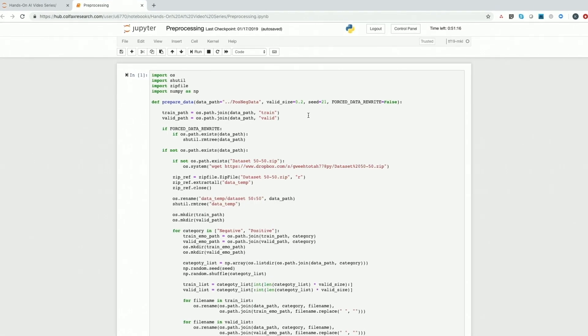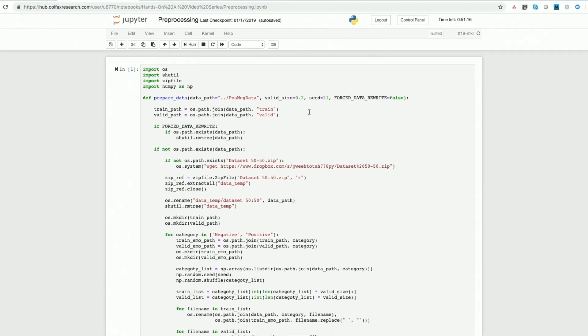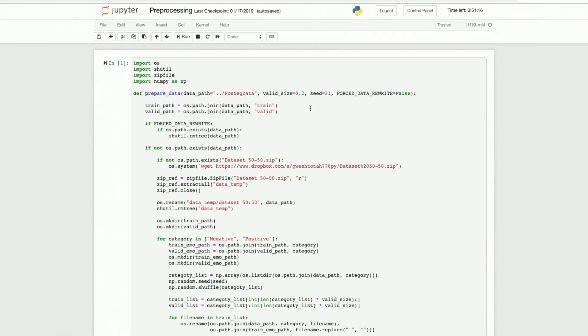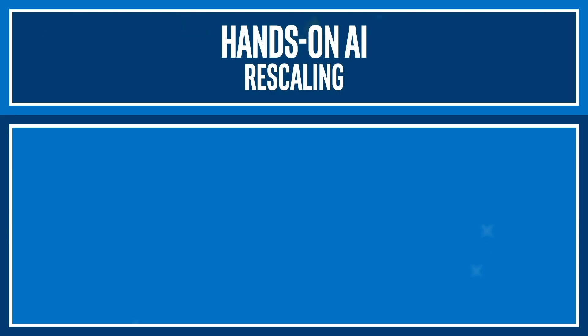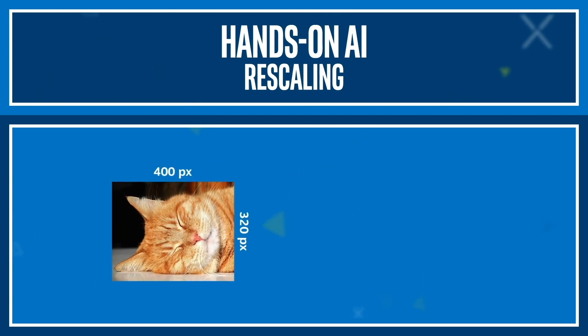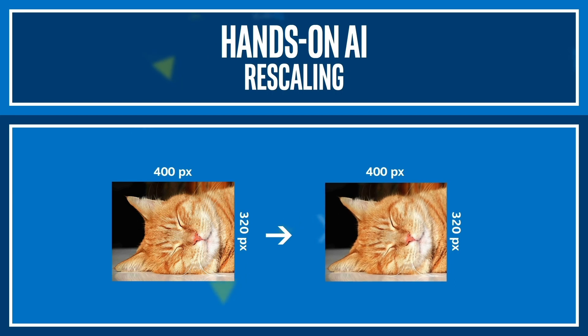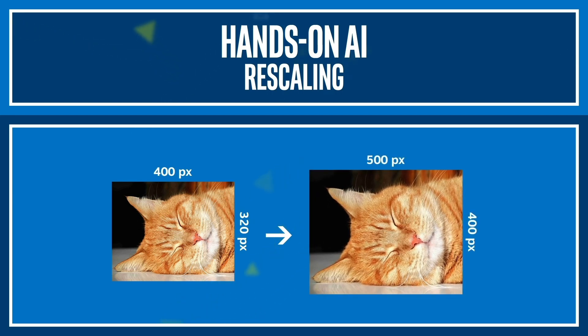Now let's take a look at a set of transformations that are commonly applied for cleaning up the data and their influence on images. All the code snippets can be found in the preprocessing Jupyter Notebook. We will also be working through these in a later episode. The first transformation is called rescaling. Rescaling is an operation that moves your data from one numerical range to another by division using predefined constants. In other words, we are transforming the images to the size we have predetermined to be the number of inputs for our machine learning model.